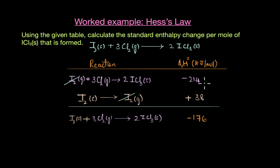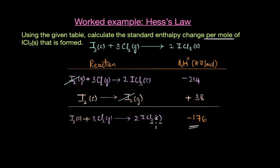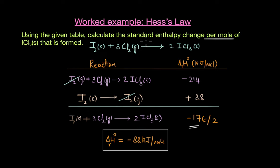The ΔH° for this combined reaction is −214 + 38 = −176 kJ/mol. However, the question asks for the enthalpy change per mole of ICl₃ formed, and this reaction produces two moles of ICl₃. So the enthalpy change per mole of ICl₃ is half of −176, giving a final answer of −88 kJ/mol.